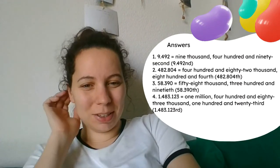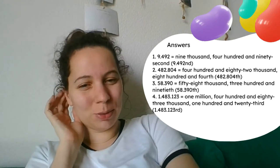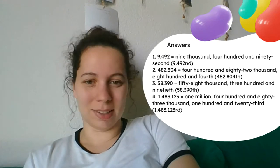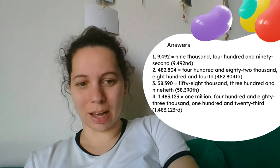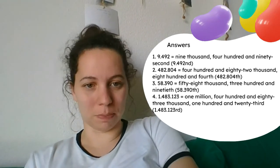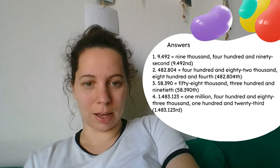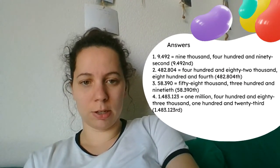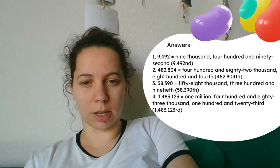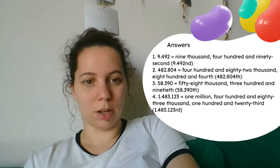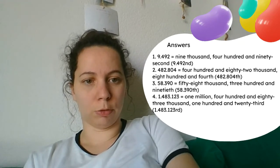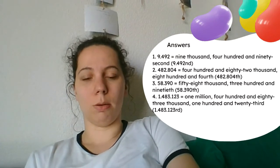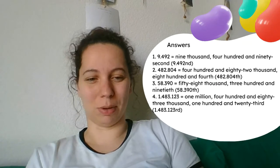On to the fourth one, which is the longest one and even had a million in it. But it doesn't matter — the millions and the thousands don't change. So it's 1,483,100, and then we need to pay attention: 23. How do we make that into an ordinal? 23rd. So it's 1,483,123rd. I'm glad I got that out.